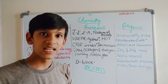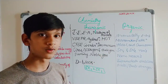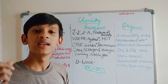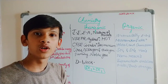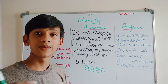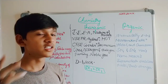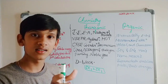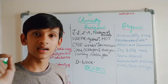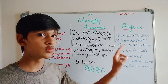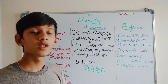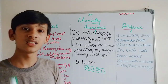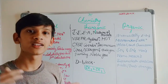Now coming to organic chemistry. There are many difficult questions here. For aromatic compounds, focus on Electrophilic Aromatic Substitution (EAS) reactions: chlorination, nitration, sulphonation, and Friedel-Crafts alkylation and acylation. Next, Markovnikov's Addition is very important every year — when HBr is added to an unsymmetrical alkyne, apply Markovnikov's rule and the anti-Markovnikov rule. Also cover Aldol condensation, Cannizzaro reaction, SN1 and SN2 reactions, and all name reactions from NCERT Class 11 and 12.